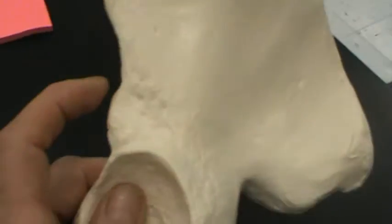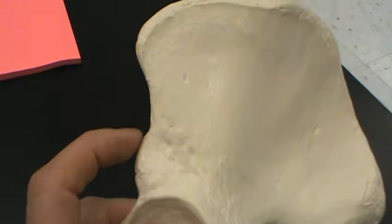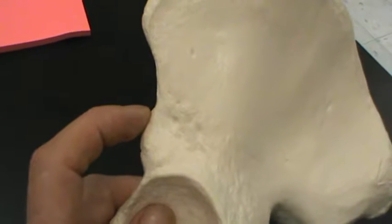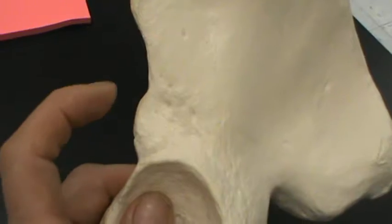What do you think this one down here would be? Oh, that would be the anterior inferior iliac spine.